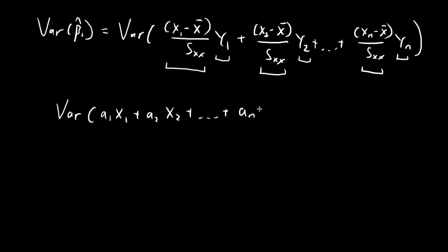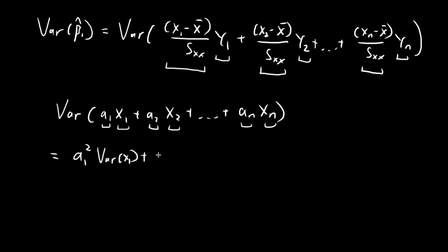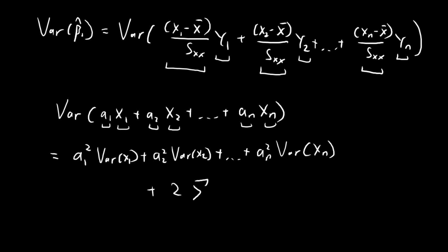So if we have a linear combination where all the a terms are constants and the x terms are random variables, then the variance of this sum equals: the sum of each constant squared times the variance of the corresponding random variable — so a1² × Var(x1) + a2² × Var(x2), and so on — plus 2 times the sum of all covariances over all combinations where i is not equal to j.